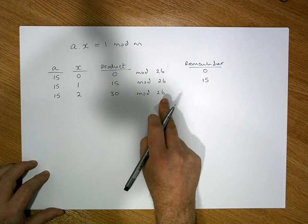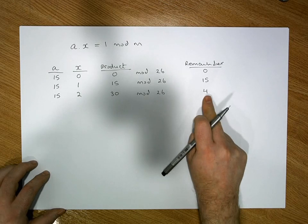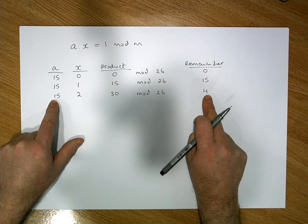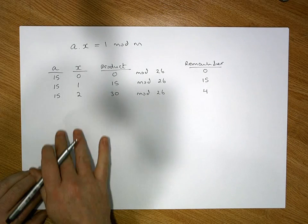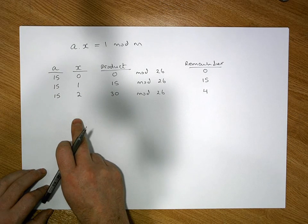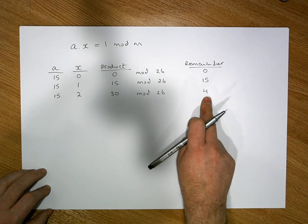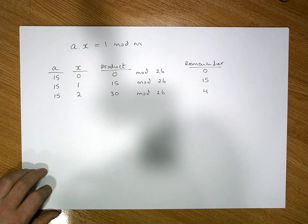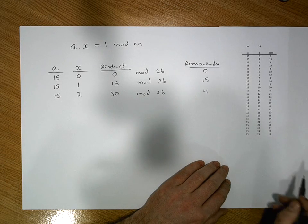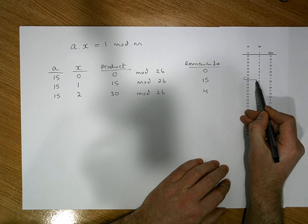Next candidate: x=2. 2 times 15 is 30. What is 30 modulo 26? Well, 26 goes into 30 once with a remainder of 4. The remainder is not 1, so 2 is not the multiplicative inverse of 15. We continue in this fashion, going through candidates until we find the value that when multiplied by a gives a product whose modulo is a remainder of 1. I've done this out in Excel — here's the Excel output.